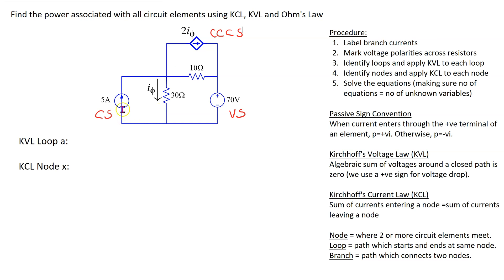Because of this current source, the current in this branch is 5 amps. This branch current is already labeled I5. Because of this dependent source, the current in this branch is 2I5. Let's label this branch current as I and also label this node as node X.